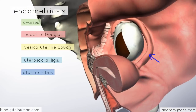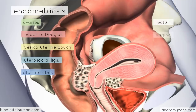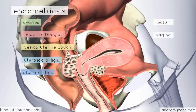Endometriosis isn't actually confined only to the pelvic cavity. It also affects the umbilicus, wound scars, the pleura, the pericardium, and even the central nervous system. Other sites in the pelvic cavity include the rectum, the vagina, and the bladder.